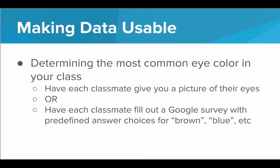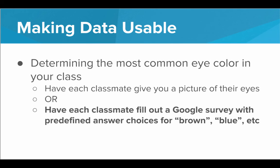Here's another scenario: say you want to determine the most common eye color in your entire class. One option is to have each classmate give you a physical picture of their eyes. The other option is to have each classmate fill out a Google survey with predefined answer choices for brown, blue, green, etc. The second option would be much better — you're making sure they're only choosing from a predefined set of choices rather than having to look through a bunch of pictures or write a program that tries to guess the eye color. The text will be much easier to process.